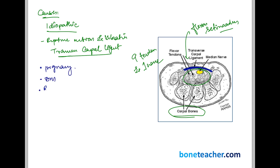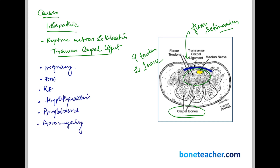Other causes include pregnancy, diabetes mellitus, rheumatoid arthritis, hypothyroidism, amyloidosis, and acromegaly. All of these essentially increase the collection of tissue or edema, occupying space and causing compression of the median nerve in the carpal tunnel, leading to carpal tunnel syndrome.